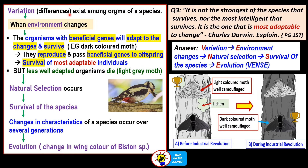Variation or differences in characteristics among organisms of the same species exist. When the environment changes, the organisms with the beneficial genes will adapt to the changes and survive, and they reproduce and pass the beneficial genes to their offspring. This means the survival of the most well-adapted or most adaptable individuals, which is the process of natural selection in nature. Because the most well-adapted individuals survive, the species also survives.